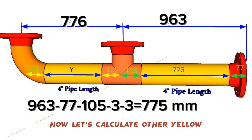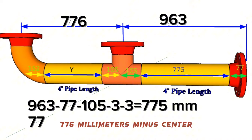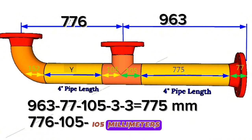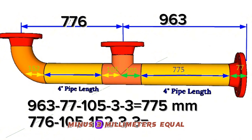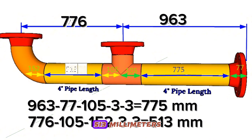Now let's calculate the other yellow colored pipe piece length. Total length 776 millimeters, minus center to end of the equal pipe tee 105 millimeters, minus center to end of the 90-degree pipe elbow 152 millimeters, minus 3 millimeters gap, minus 3 millimeters gap, equals 513 millimeters. The length of the second pipe piece is 513 millimeters.